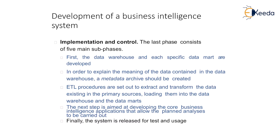The last stage, implementation and control, contains five main sub-phases. First, the data warehouse and each specific data mart are developed. Second, a metadata archive is created to explain the meaning of the data contained in the data warehouse. Third, ETL procedures are set out to extract and transform data from primary sources and load them into the data warehouse and data marts. Fourth, the core business intelligence application is developed to carry out the planned analysis. Finally, the system is released for testing and usage.